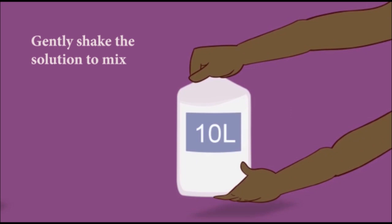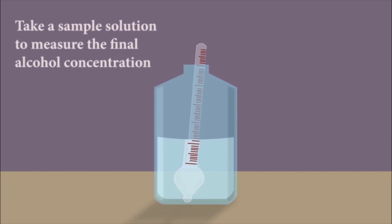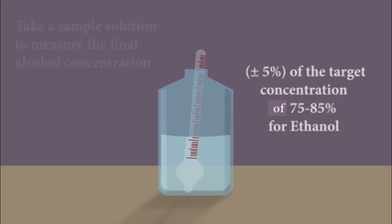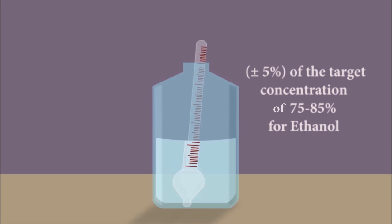In making larger containers, a paddle can be used before closing the lid. Depending on the container size, take a sample of the hand rub and using the alcohol meter measure the alcohol concentration of the final use solution. The accepted limits should be fixed to plus or minus 5% of the target concentration of 75 to 85% for ethanol.